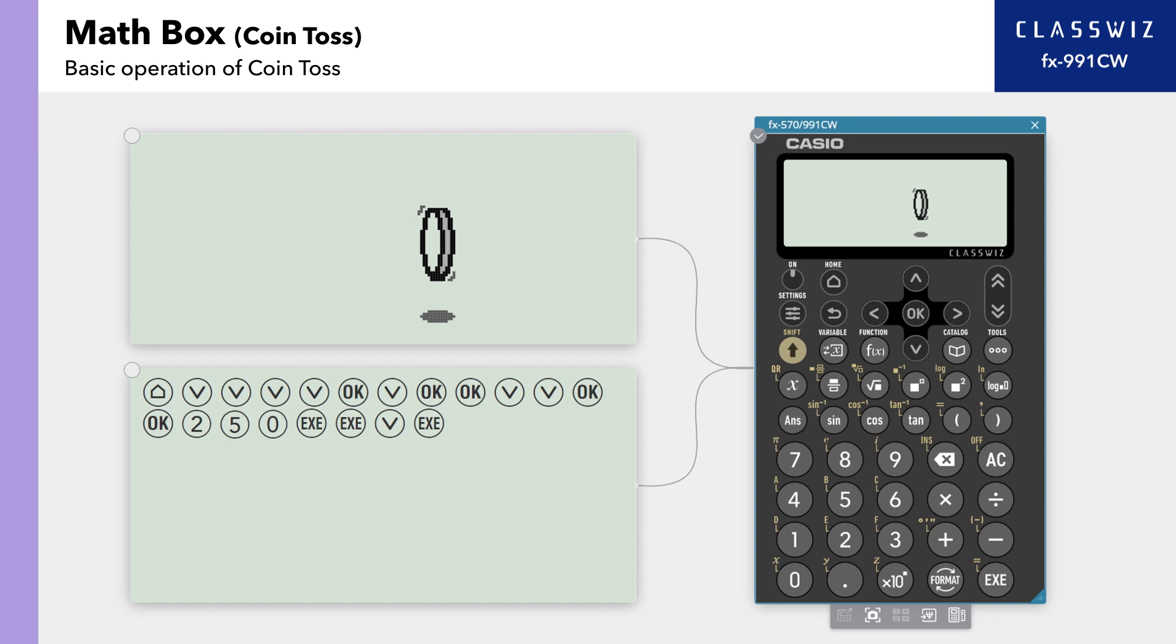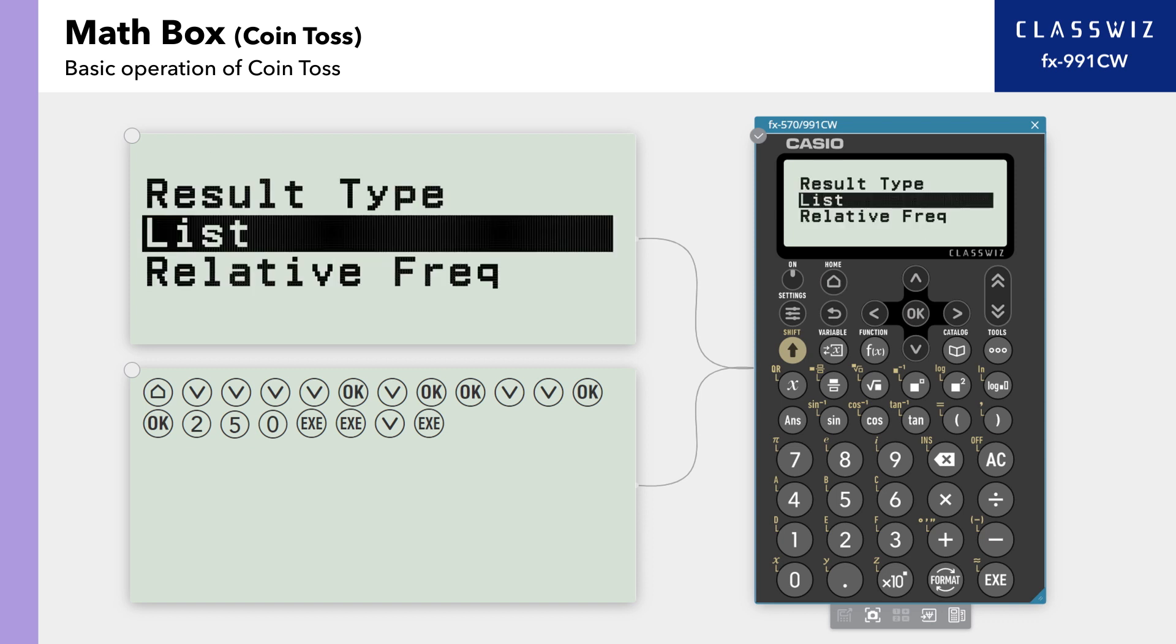After a coin toss animation, the results are displayed. There are two types of results. First, select List.